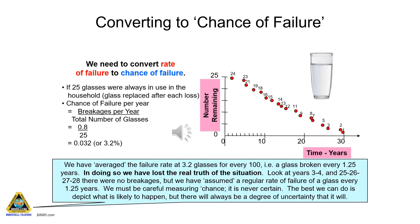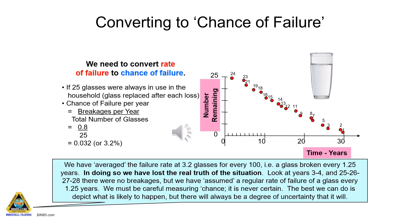Converting to chance of failure: we need to convert the rate of failure to the chance of failure. We have averaged the failure rate at 3.2 glasses for every 100 — in other words, a glass is broken every 1.25 years. In doing so we have lost the real truth of the situation. Look at years 3–4 and 25, 26, 27, and 28 — there were no breakages, but we have assumed a regular rate of failure of a glass every 1.25 years.